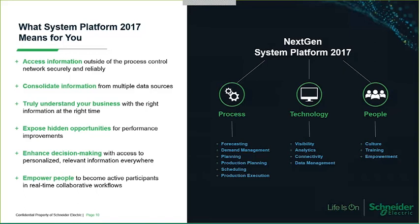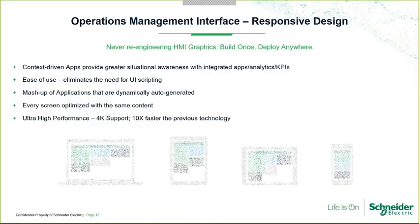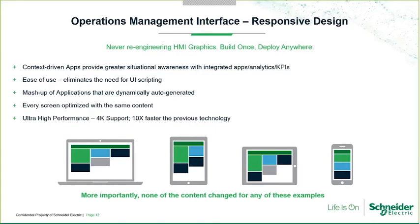OMI exposes hidden opportunities, provides enhanced decision-making capability, and empowers people across the entire ecosystem within an organization. We look at people, process, and technology — a derivative of the Capability Maturity Model Integration, or CMMI — focused on how to improve a process by taking a holistic view. Nearly everything we've done with System Platform 2017 has been done with a focus on improving our customers' operational efficiency.